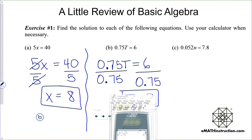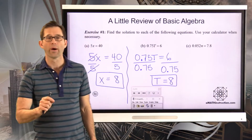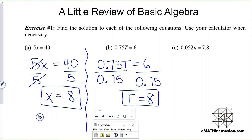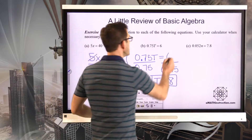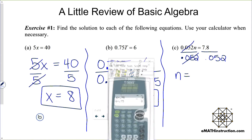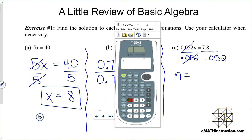These kinds of equations are quite simple. I'd like you to pause the video and figure out what n is in this final equation. Well, because 0.052 is multiplying n, I can divide both sides of this equation by 0.052. That multiplication will then cancel on the left-hand side. And on the right-hand side, I let my calculator do the rest of the work: 7.8 divided by 0.052, and we get n = 150.